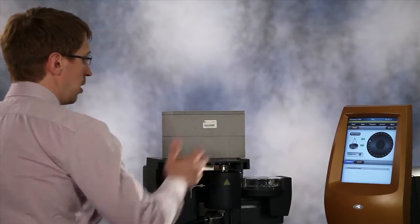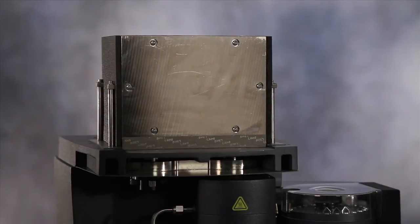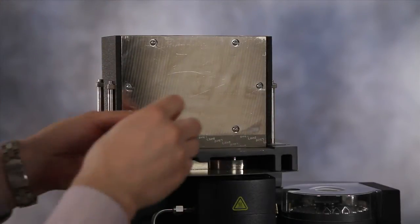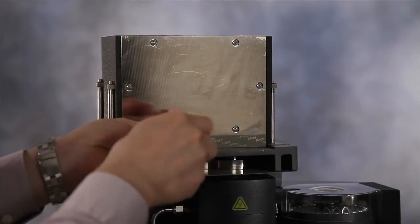We'll remove the insulation jacket, and then we need to remove the front plate by unscrewing six screws in front.